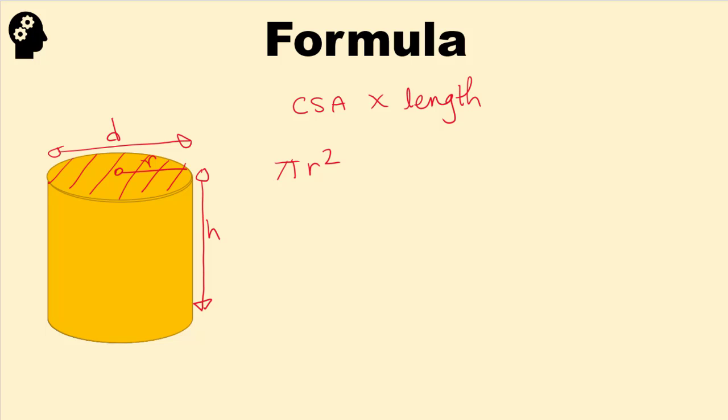Now we need to multiply by the length. Now we can call it length or call it height. Because it's a cylinder, we can just call it height. So the volume of cylinder is equal to π r² times by the height. So we can just quickly simplify that. So π r² h. And using this formula, we can work out the volume of cylinder.